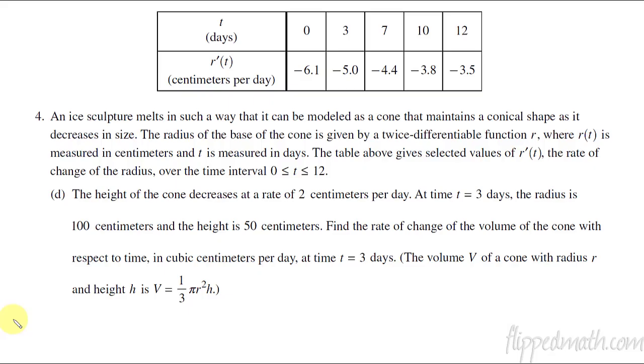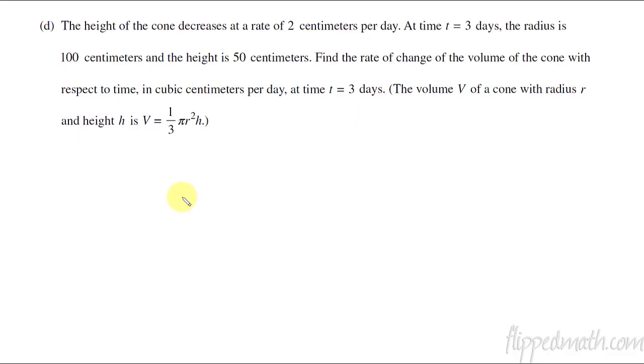Our last problem part D. We've got this cone that's decreasing. They're going to ask us to find the rate of change of the volume. I need dV/dt and that is my question mark. This is what I'm trying to solve for. I'm going to end up taking the derivative of this thing to get dV/dt or derivative with respect to time. The height of the cone is decreasing at dh/dt equals negative 2 centimeters per day. At time t equals 3, the radius is 100 and the height is 50.